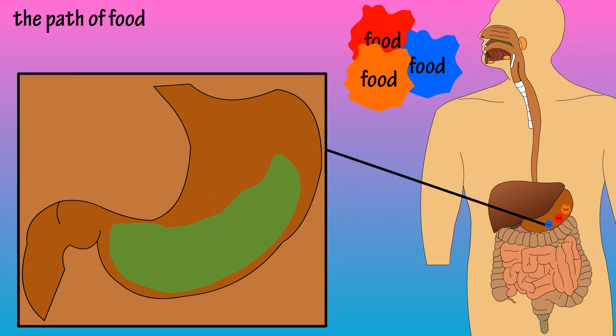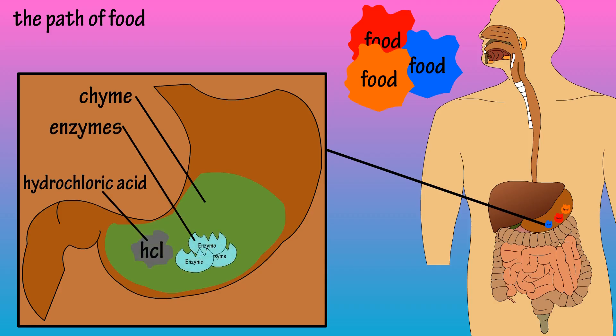Here food is churned and mixed with gastric juices to form chyme, which is a soupy-like mix. The gastric juices include digestive enzymes and hydrochloric acid, which helps break down food further and also kills potentially harmful bacteria.